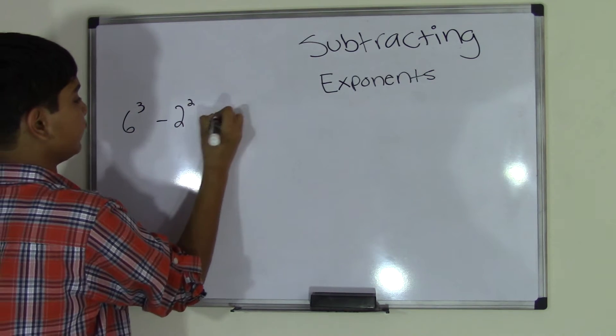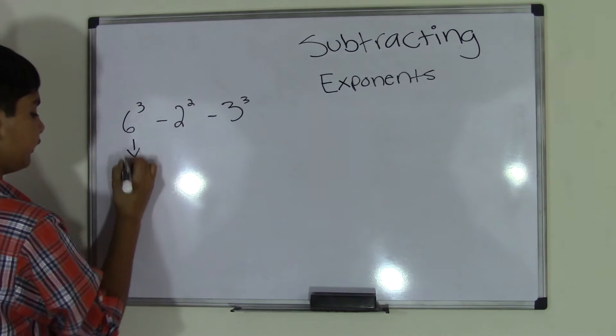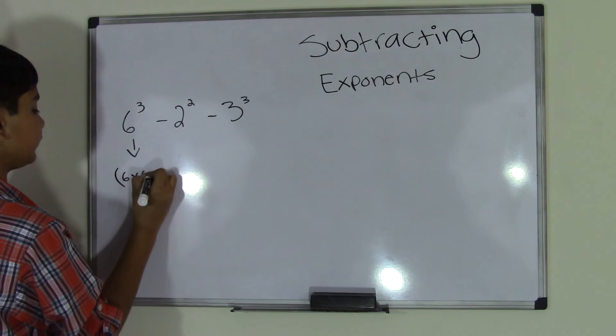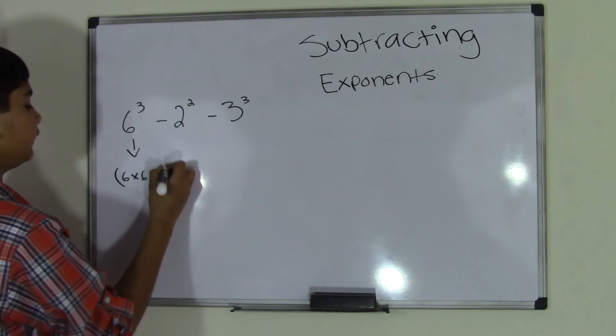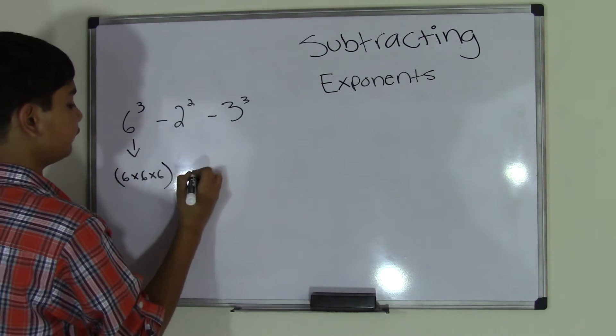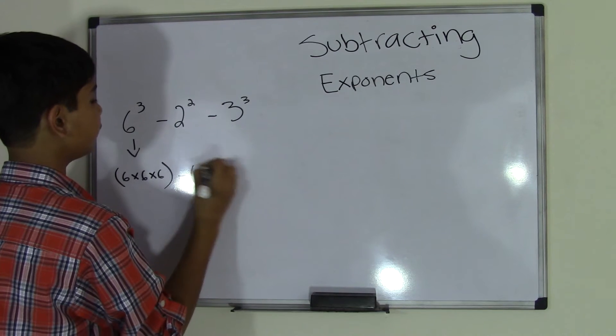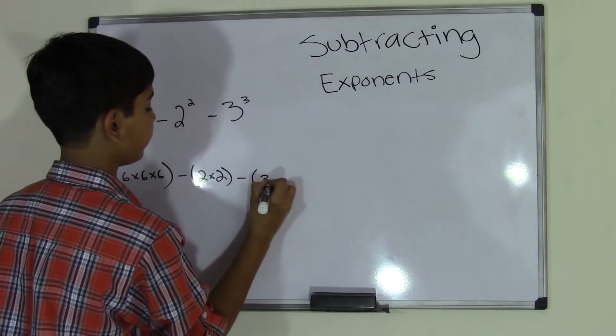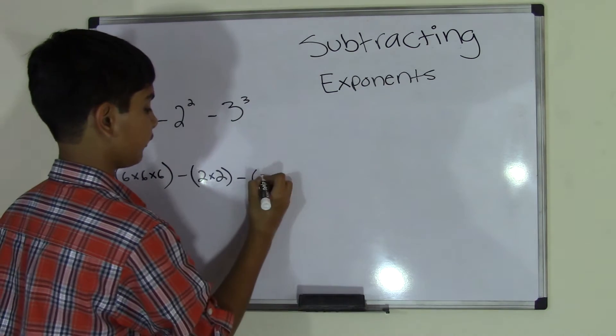Remember, change the exponents into multiplication form. So we have 6 times 6 times 6 because it's 6 to the power of 3. Now we do 2 times 2 because it's 2 to the power of 2. Add the subtraction sign, and we do 3 times 3 times 3 because it's 3 to the power of 3.